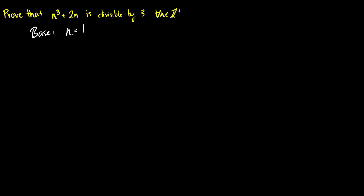So let's plug 1 into n cubed plus 2n. This is going to be 1 cubed plus 2 times 1, which is 1 plus 2, and that's equal to 3. Therefore, we know that 3 is divisible by 3, so we're good.